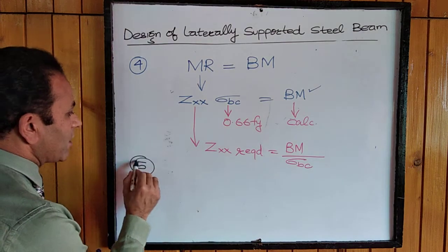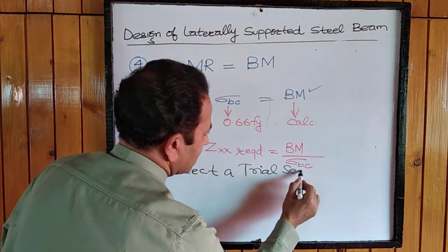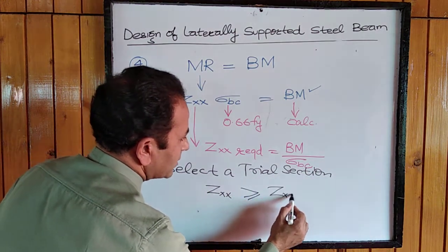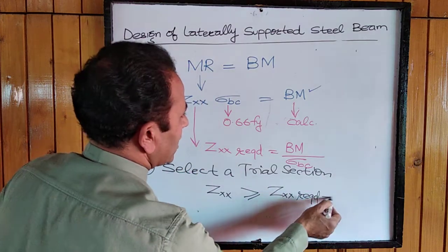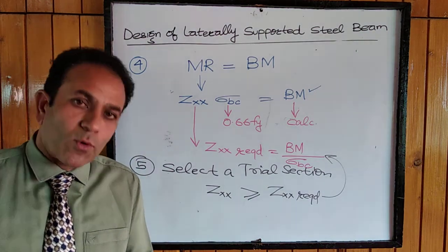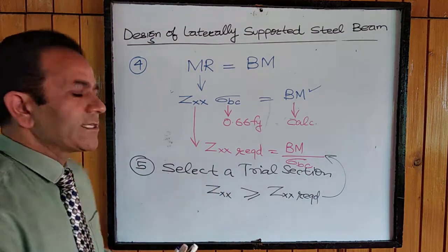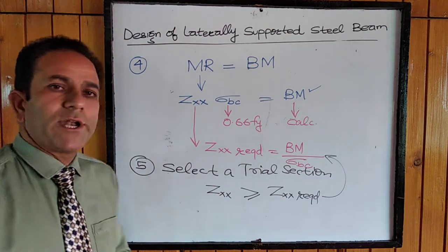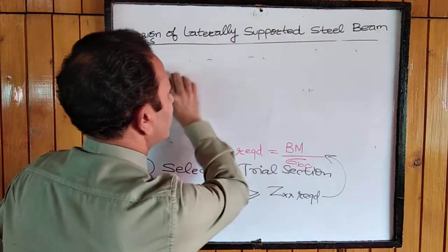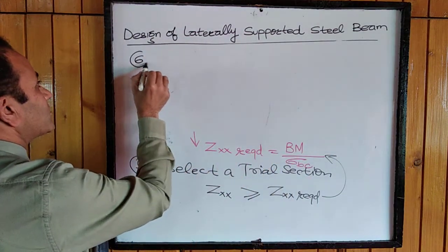The required Zxx provides a hint to select a section from the steel table. In the next step we select a trial section from the steel table which has Zxx greater than or equal to the required section modulus. We select an I-section, or if it doesn't suffice, a built-up section. This trial section must also be safe in other design parameters.